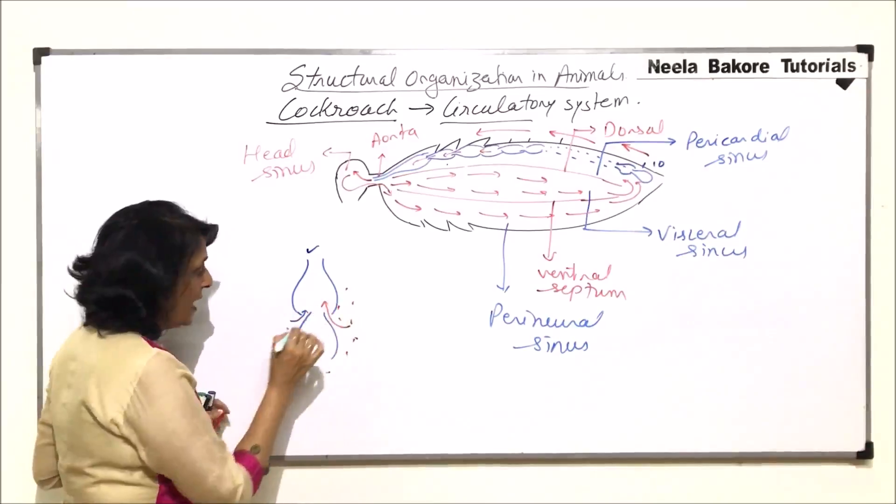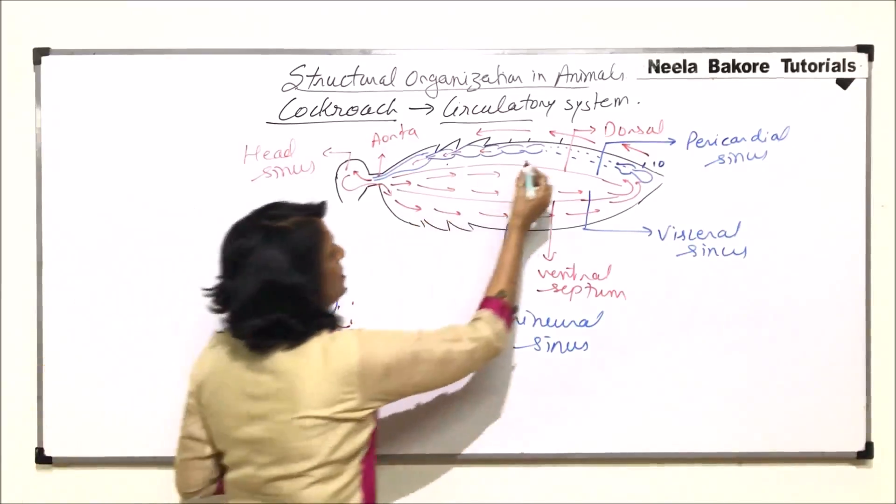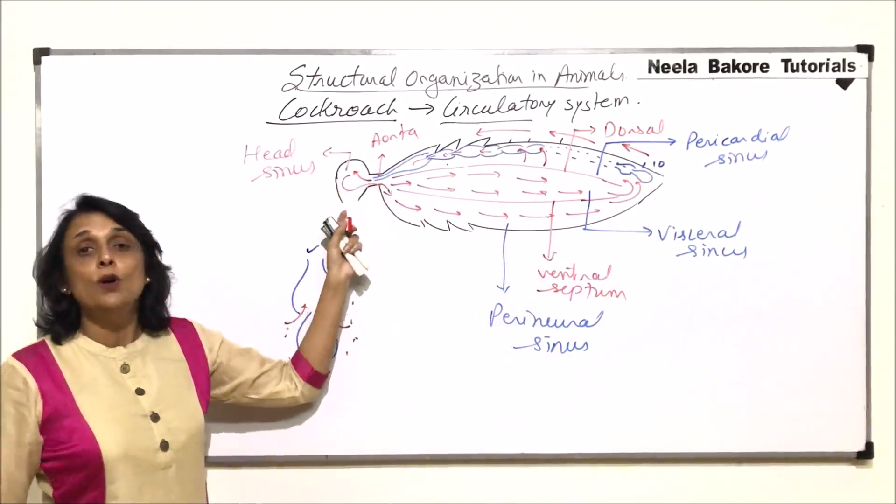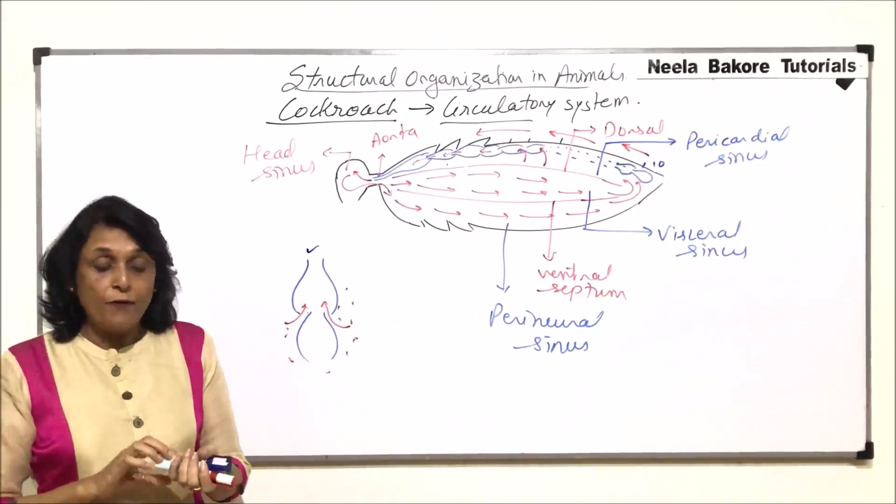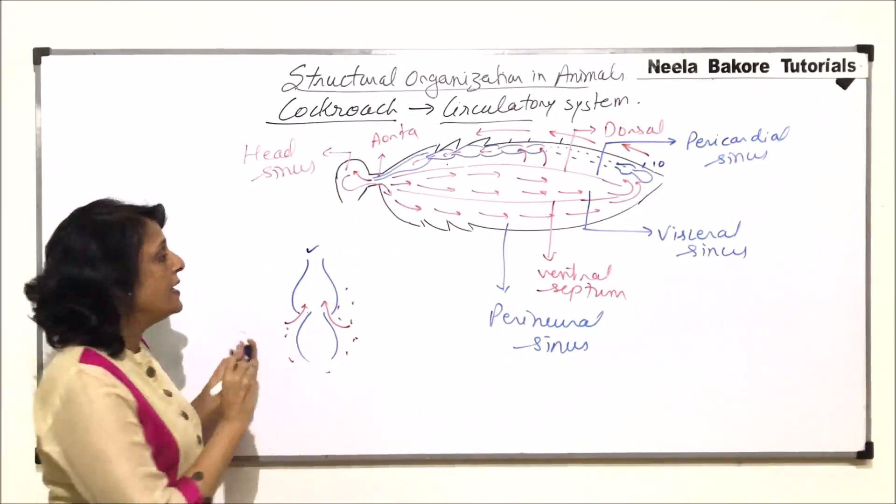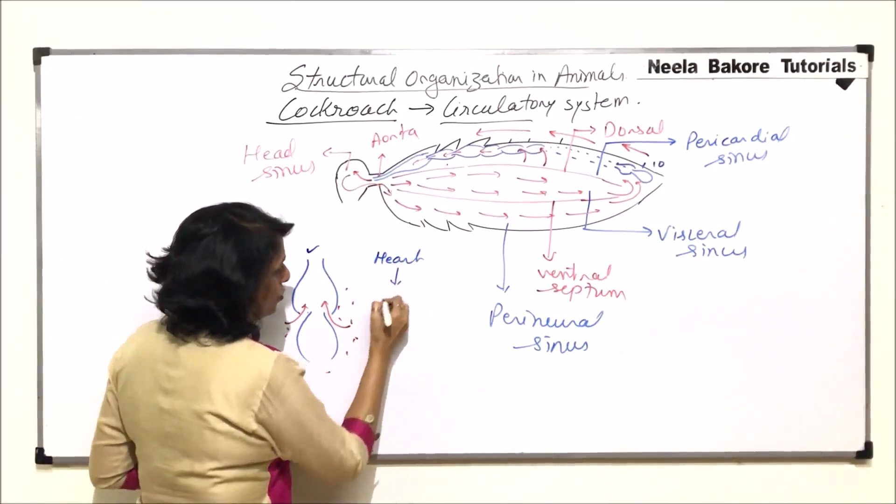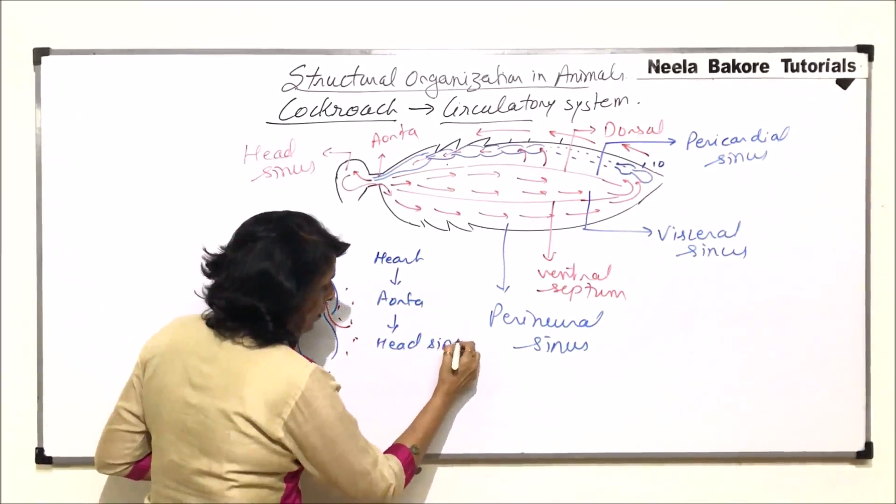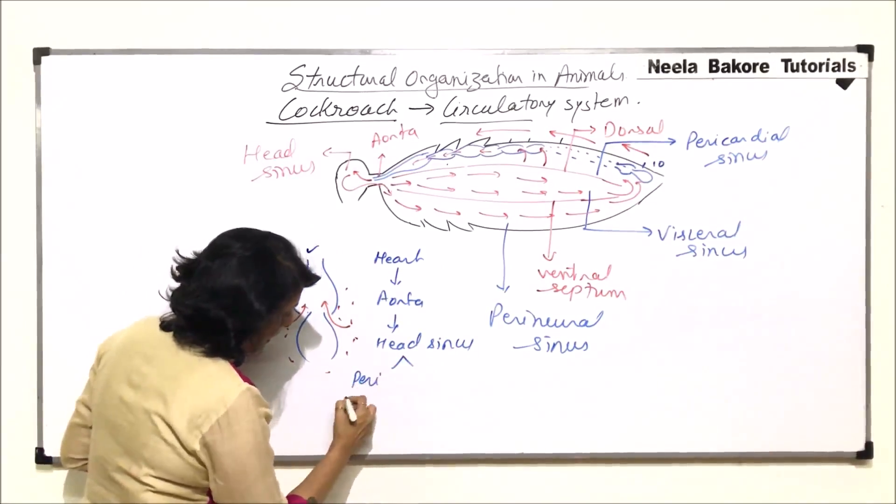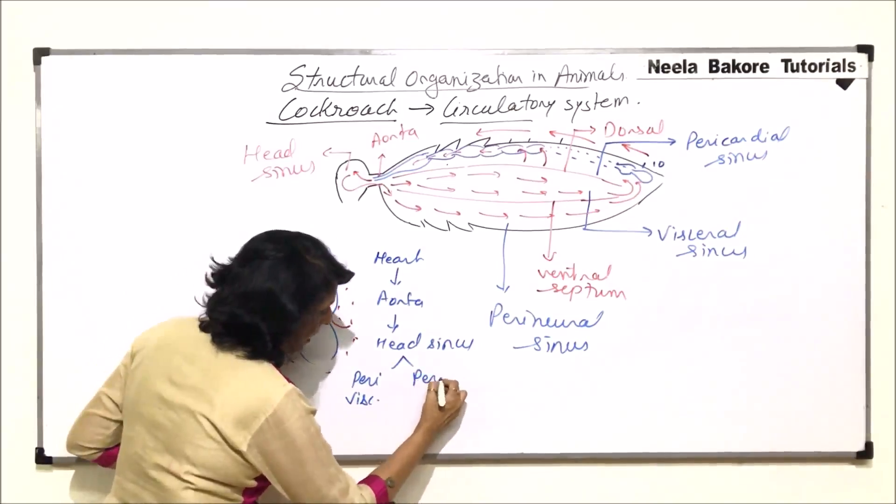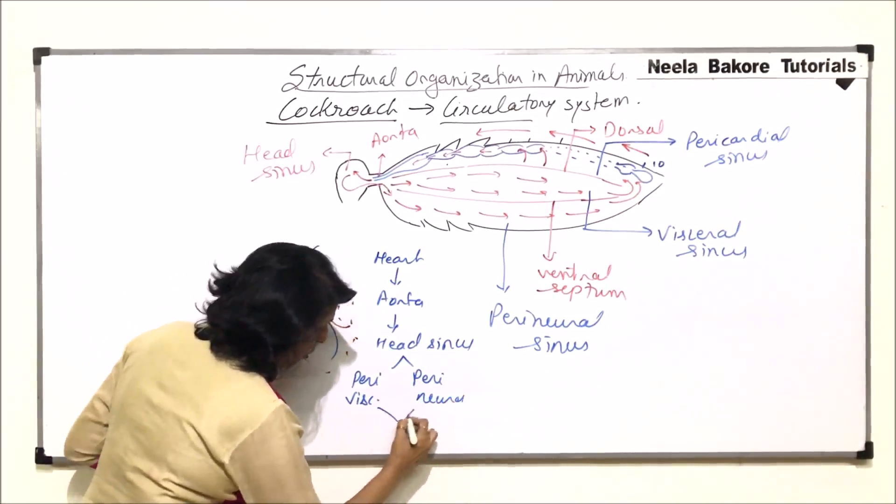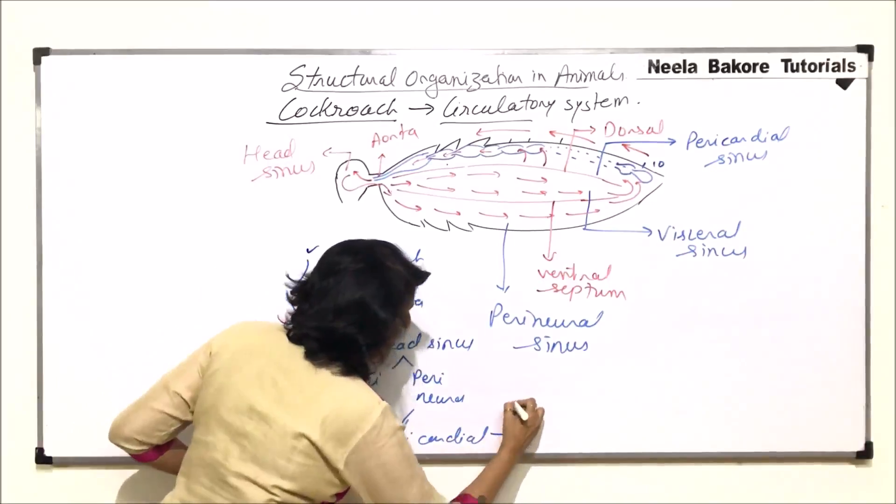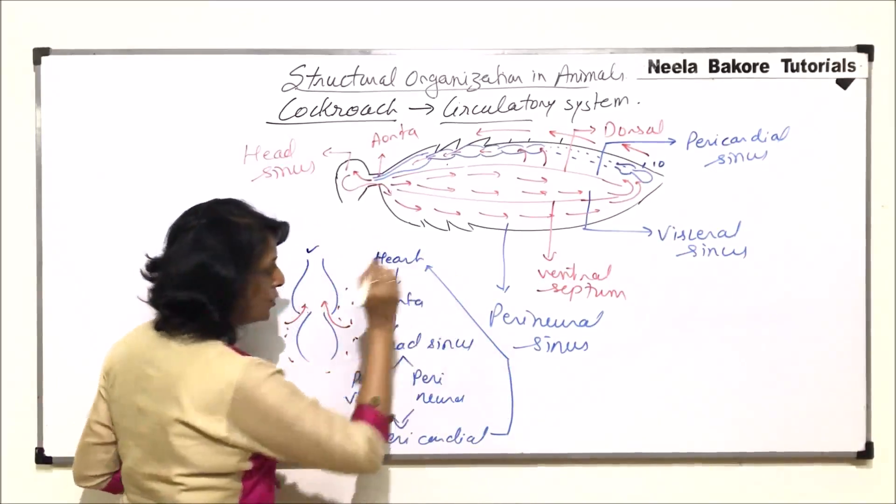That means the blood is now in this pericardial sinus. So from this ostea, the blood enters into the chambers. So from here it is going to go inside the heart. And again it will be sent to the head sinus. So the flow of hemolymph or blood is from heart. It goes through aorta into head sinus. From head sinus it goes into perivisceral and perineural sinus. And from both these places it goes to pericardial sinus. And from pericardial sinus it again enters into the heart.